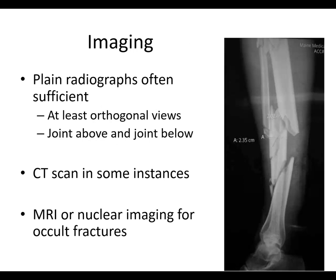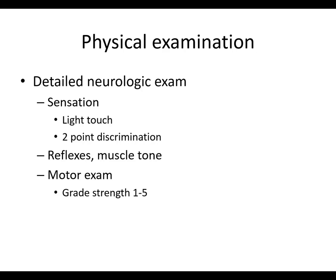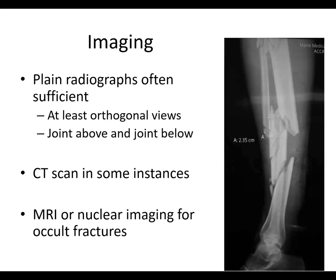Get a detailed neurologic exam: check sensation — including light touch, pressure, and two-point discrimination (especially with suspected nerve injury in the hand) — reflexes, and motor exam graded 1 to 5, where 1 is no motion and 5 is motion against resistance. For example, check the quadriceps and grade motor strength. These findings need to be specific and repeated on every assessment. We'll stop here and pick up on imaging in the next part of the talk.